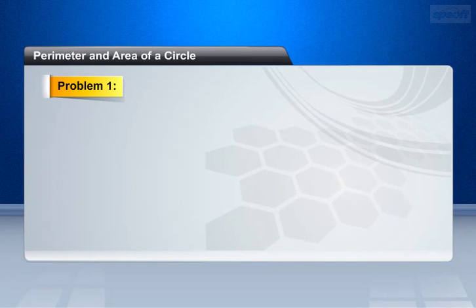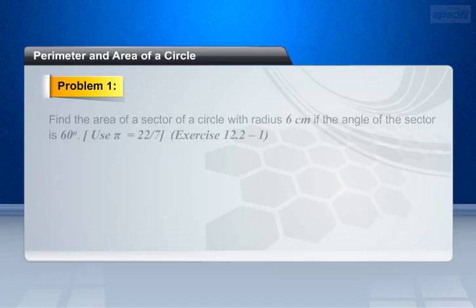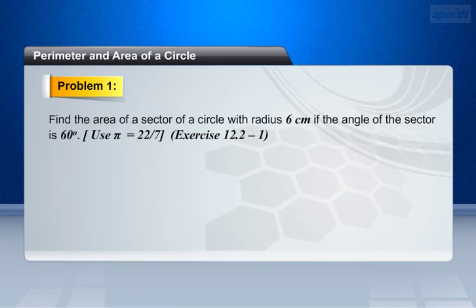Now let us see some exercise problems related to areas of sectors and segments of a circle. Problem 1: Find the area of a sector of a circle with radius 6 cm, if the angle of the sector is 60 degrees. Use pi equals 22 by 7.